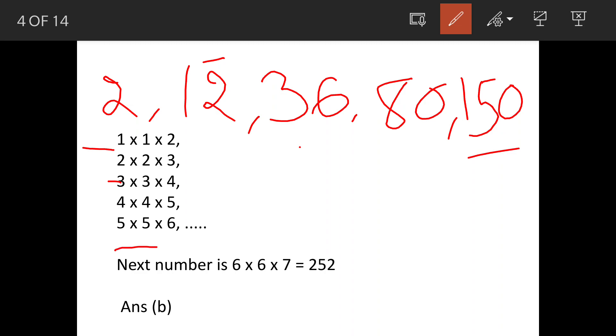The last number is 5 × 5 × 6, so the next number should be 6 × 6 × 7. So what is the pattern? All these multiples are increasing, these are also increasing, and these are also increasing.